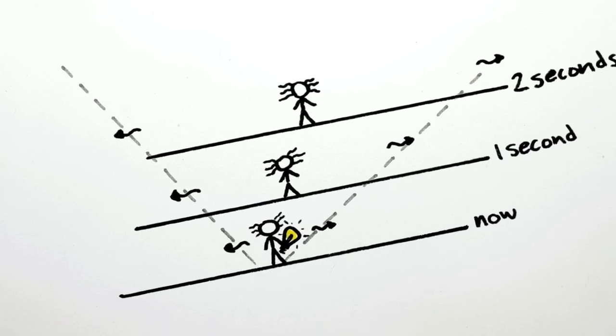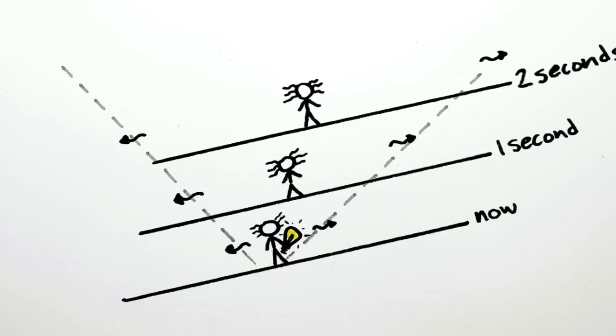So if we just rotate the slices of time while sliding them, then we can keep the speed of light the same, and explain how things can move too.